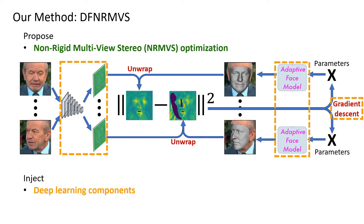Deep learning components are injected to alleviate the problem difficulty with data-driven priors through the feature metric objective, adaptive phase model, and the learnable gradient descent.